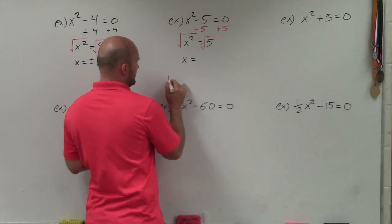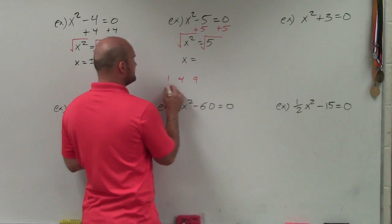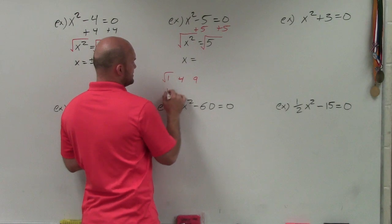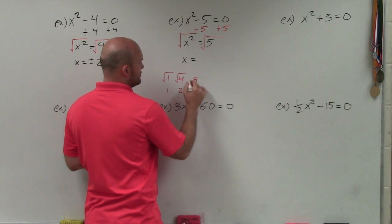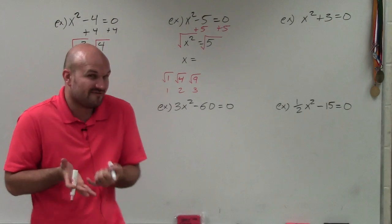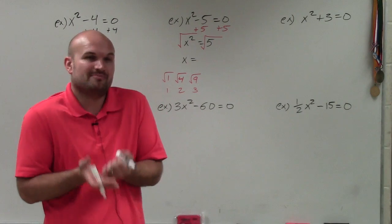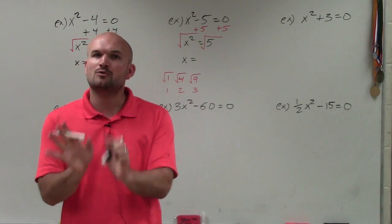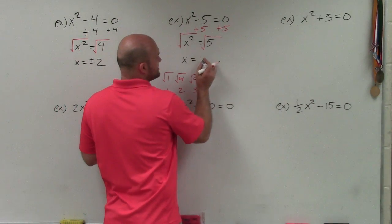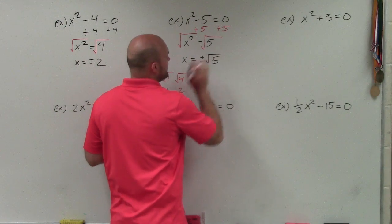Since the square root of 5 is not going to leave us with an integer, we're just going to leave it as the square root of 5. So my final answer is just plus or minus the square root of 5.